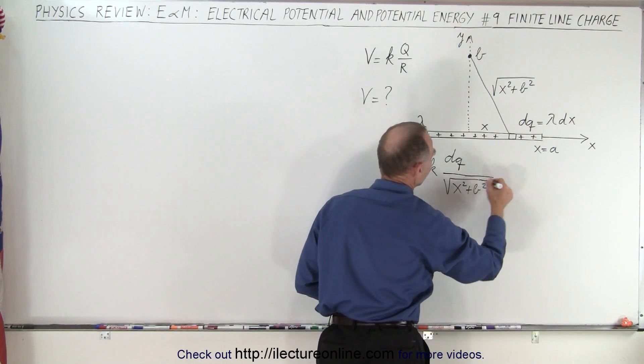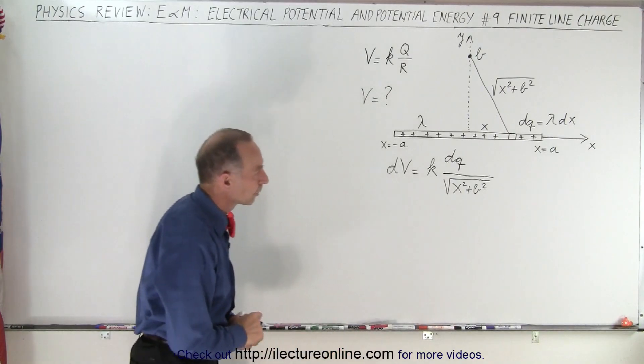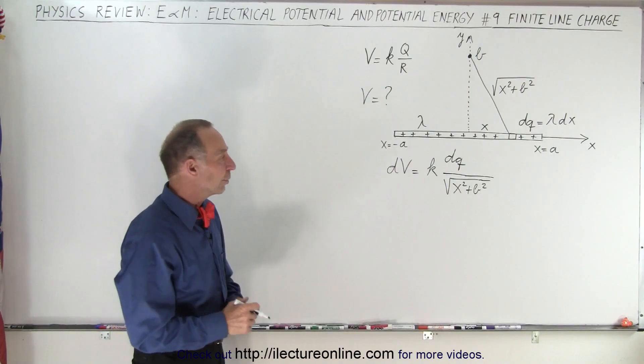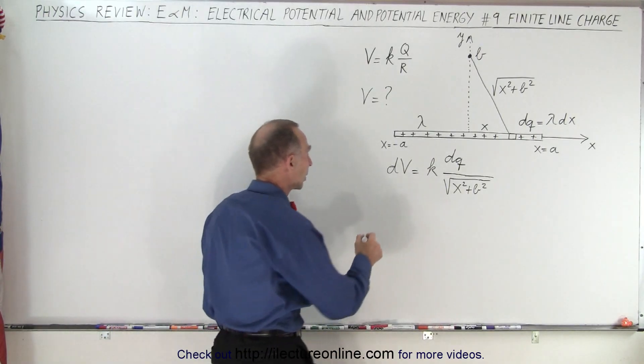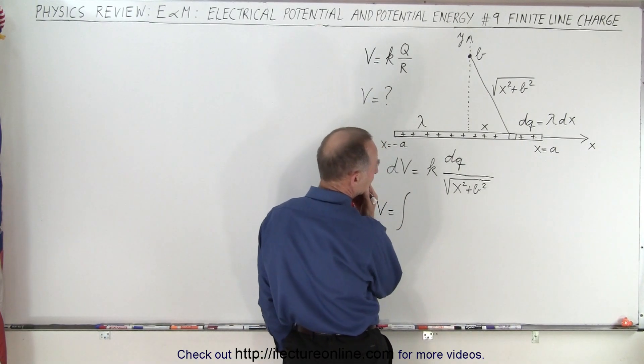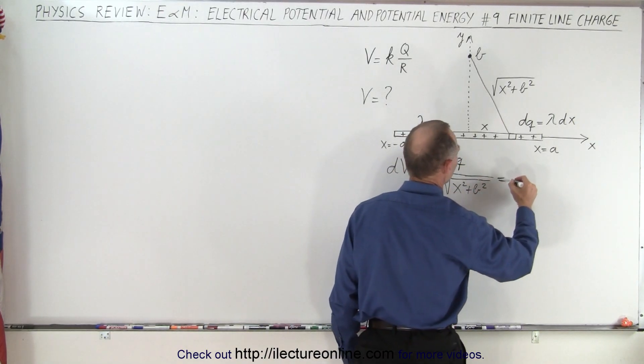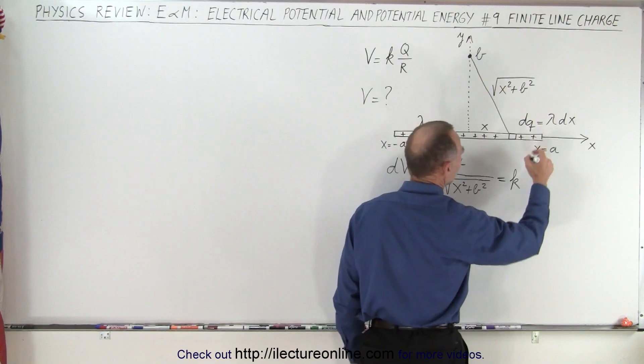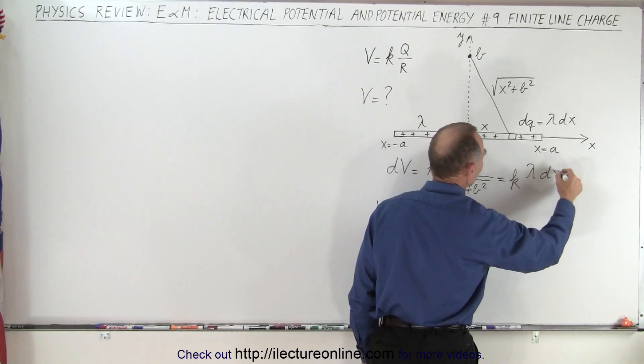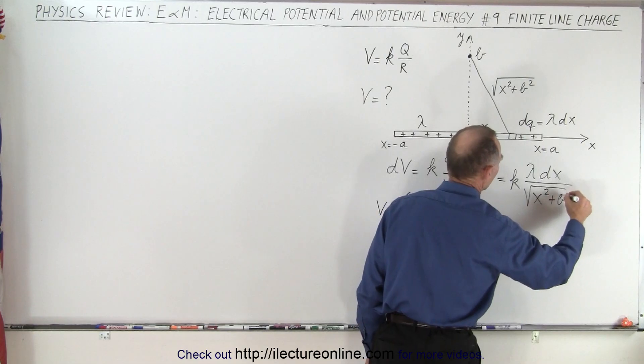Notice that in this case x is the variable and b is a constant. So if we're going to find the full voltage we have to integrate that, so that becomes V which is equal to the integral of that. Now before we do that maybe we should rewrite dq. So we can write this as k and dq can be written as lambda times dx divided by the square root of x squared plus b squared.